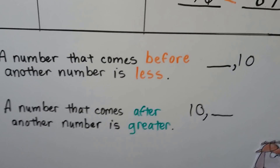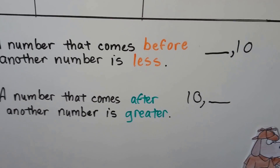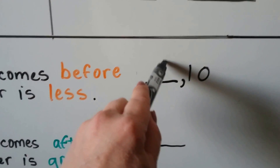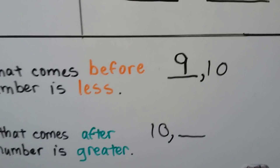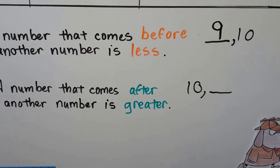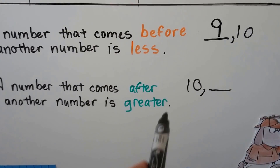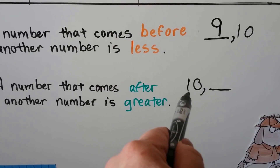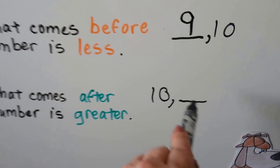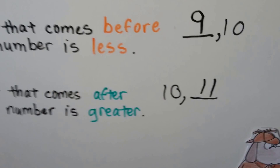A number that comes before another number is less. The number that comes before ten is nine, so nine is less than ten. A number that comes after another number is greater. What comes after ten? Eleven — so eleven is greater than ten.